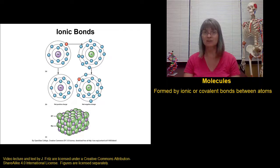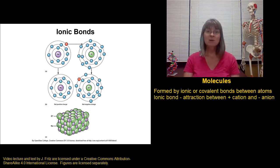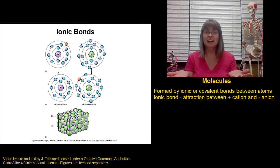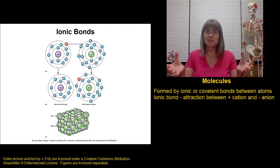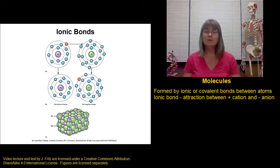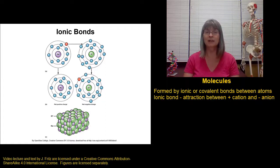We're going to start with ionic bonds. An ionic bond is pretty straightforward — it's a bond that forms between two ions. You have a positively charged cation and a negatively charged anion, and opposites attract. The positive and negative ions are attracted to each other and that forms an ionic bond. One of the most common ionic bonds is the bond between sodium and chlorine that gives us sodium chloride, or salt.